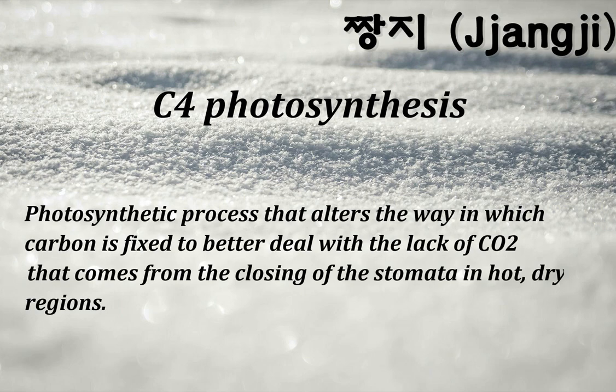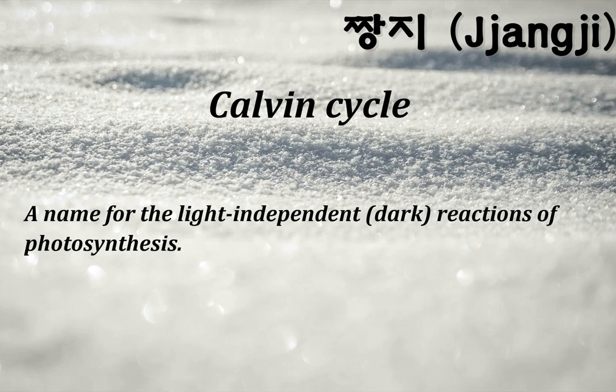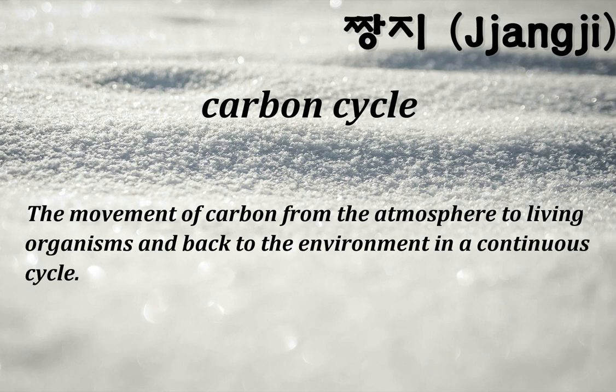C4 photosynthesis: a photosynthetic process that alters the way carbon is fixed to better deal with the lack of CO2 that comes from the closing of stomata in hot, dry regions. C4 plant: a plant that has adapted its photosynthetic process to more efficiently handle hot and dry conditions. Calvin cycle: a name for the light-independent (dark) reactions of photosynthesis. Carbon cycle: the movement of carbon from the atmosphere to living organisms and back to the environment in a continuous cycle.